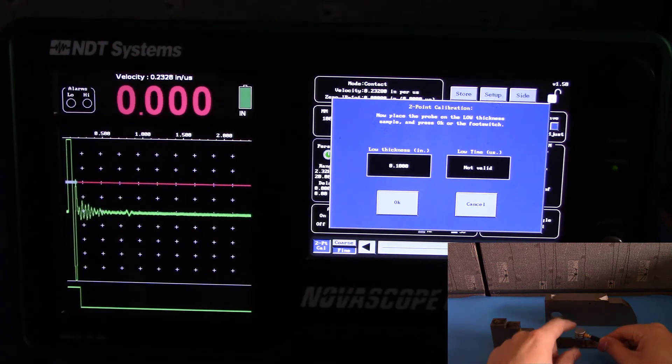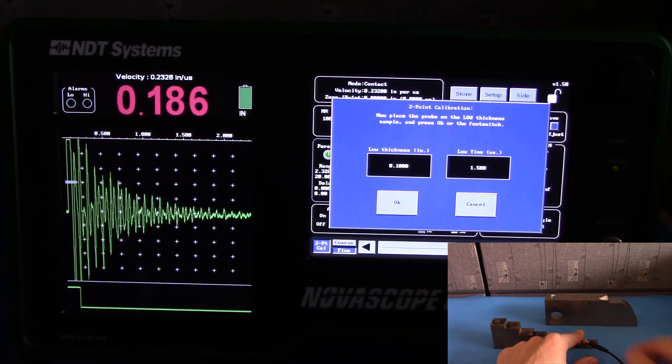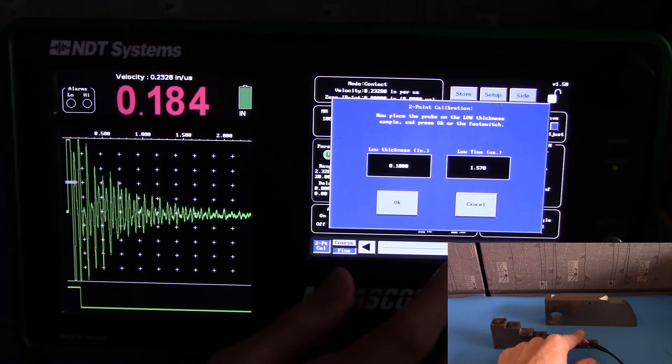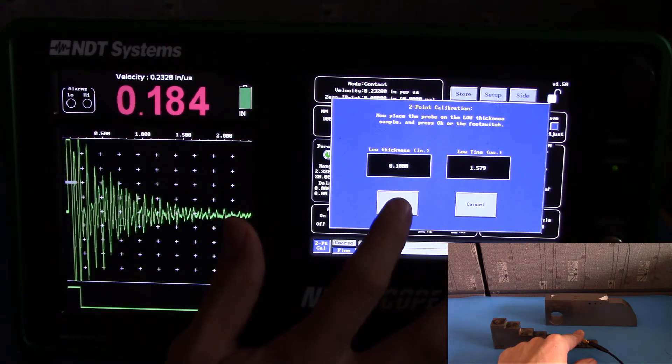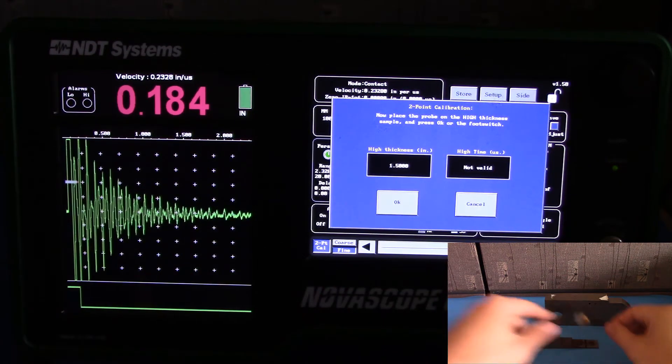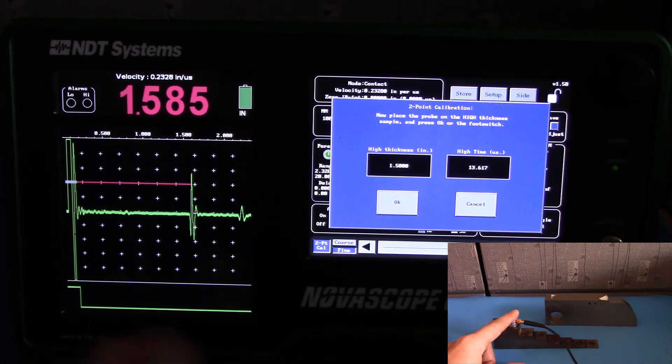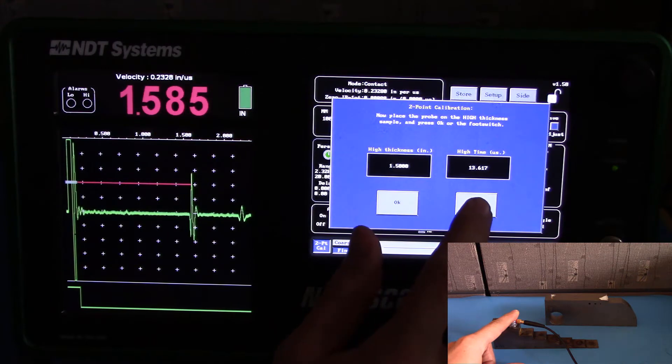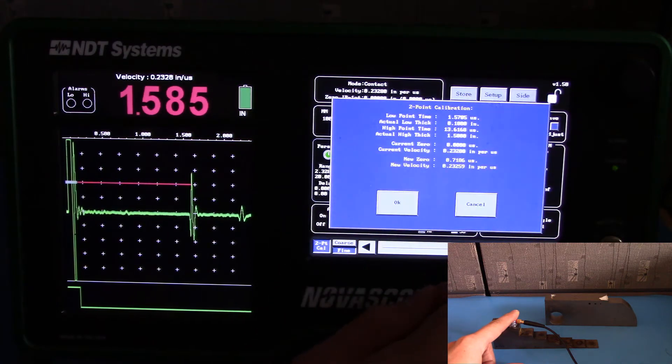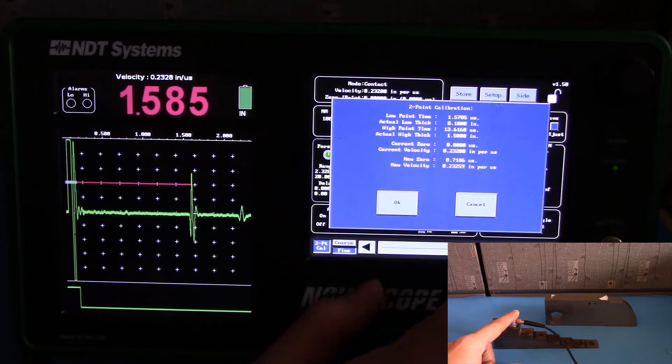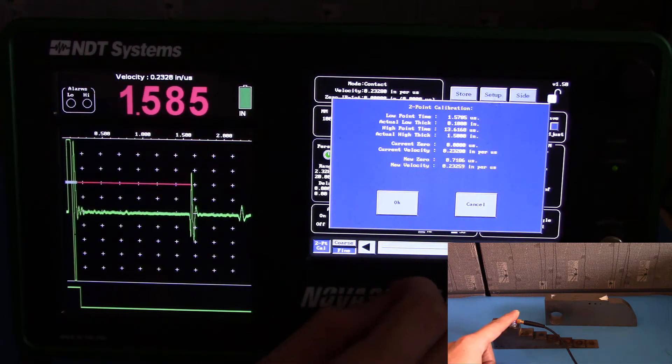Now go ahead and couple to your region of low thickness. When you get a steady reading, hit OK. And go to your region of high thickness. Hit OK when you get a steady reading. And the gauge has now calculated our new zero and new velocity. Hit OK to apply.